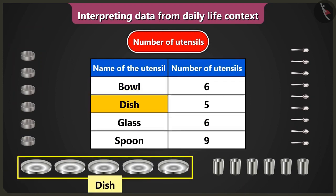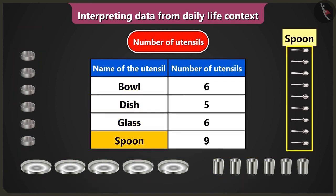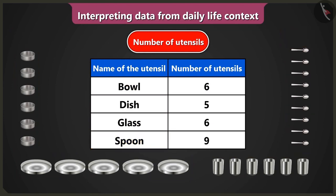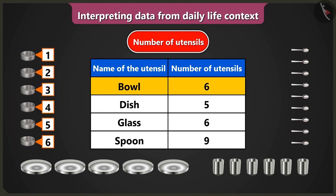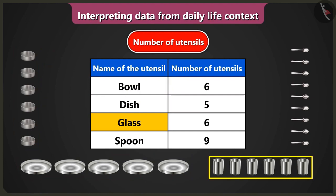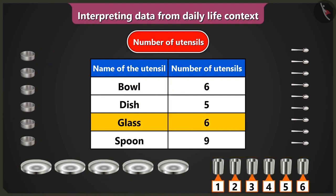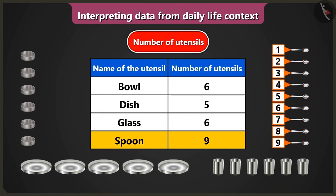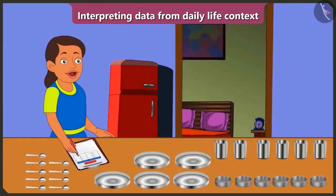Names of utensils — bowl, dish, glass, and spoon — are written here. So the data about four kinds of utensils is given. The number of bowls is six, the number of dishes is five, the number of glasses is six, and the number of spoons is nine. I have interpreted the data about the number of utensils from this table.